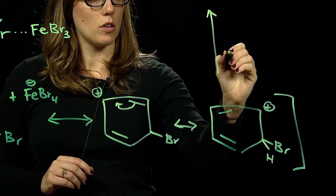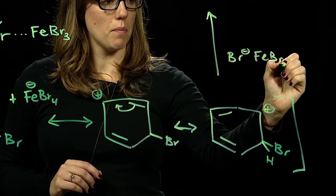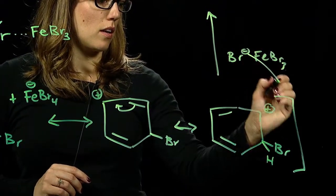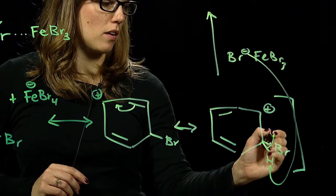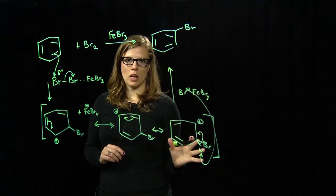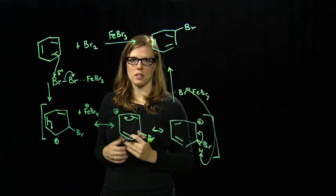But we can have the Br- that's attached to the FeBr3 come back and eliminate the proton attached to the carbon with the bromine on it. So we form an SP2 hybridized carbon atom and we re-aromatize the ring. And that's how we make bromobenzene from bromine and benzene.